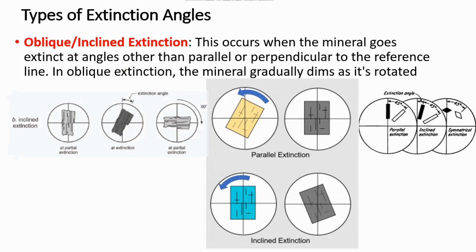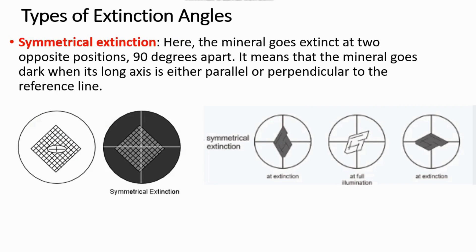With respect to inclined extinction, immediately when the long axis of a mineral is parallel to the crosshairs, the mineral will be visible. But when it's at a certain angle away from this reference line, the mineral turns dark. This occurs when a mineral goes extinct at angles other than parallel or perpendicular to the reference line. In oblique extinction, the mineral gradually dims as it's rotated, going extinct only when the long axis reaches that certain angle.